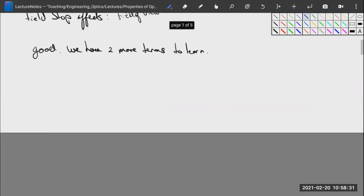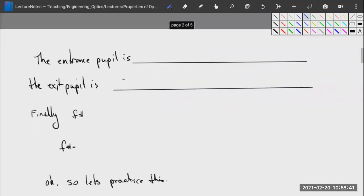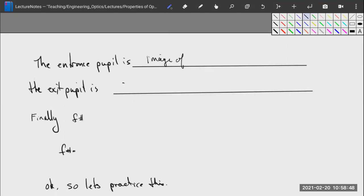The entrance pupil is the image of the aperture as seen from the object. The exit pupil is the image of the aperture as seen from the image. What that means is we have to project our aperture stop through our optical system to see what the image looks like from the other direction.